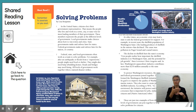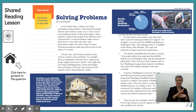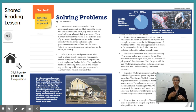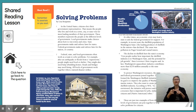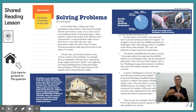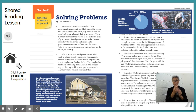Then Governor Chris Gregoire said: 'Washington's aquaculture industry contributes more than $270 million annually to the state economy.' To protect Washington's resources, the state and federal government joined together. They formed the Washington Shellfish Initiative, WSI. Its goal is to improve the quality of Washington's marine waters and to create jobs in the shellfish industry. As envisioned, the initiative will protect and enhance a resource that is important for jobs, industry, citizens, and Native American tribes. These are just two examples of how different levels of government can join together to help solve problems for citizens.